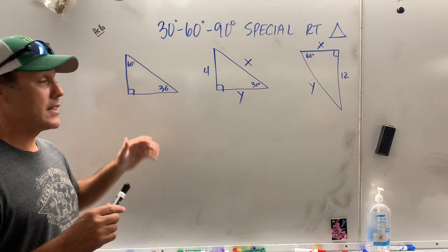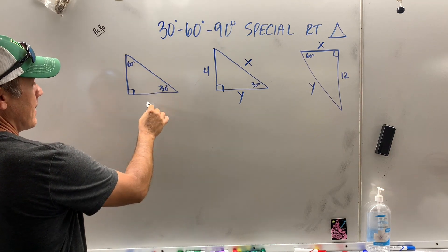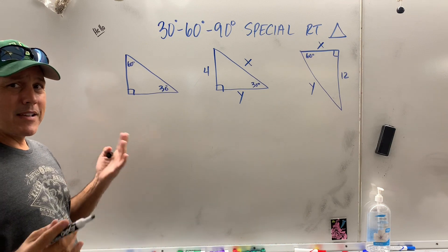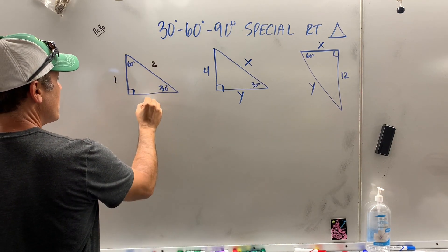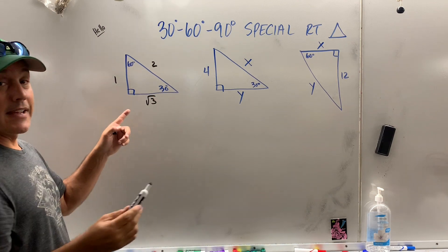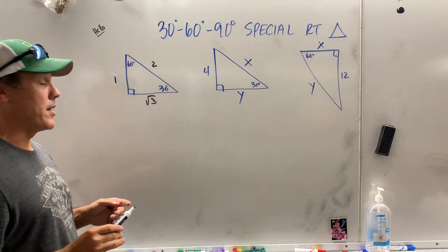They do it a little different than I do. They put X, 2X, and X radical 3. To me, letters scare kids, so I do 1, 2, radical 3. Again, SAT: 1X, 2X, X root of 3. It's the same thing.